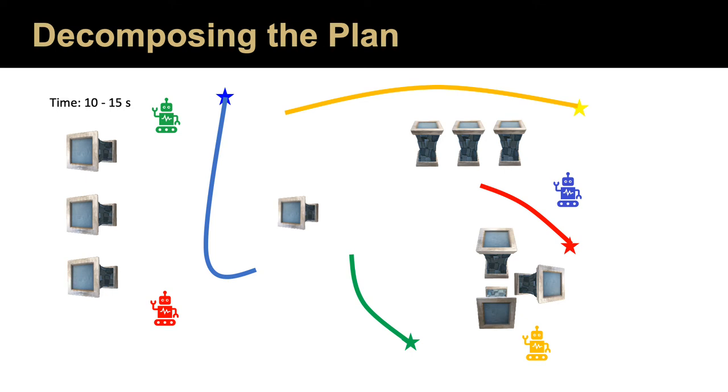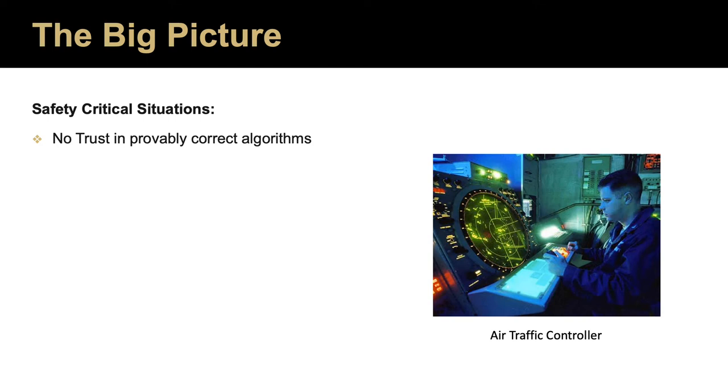A common question at this point is why we should even care about explaining a multi-agent path. The answer stems from the fact that there is little to no trust between provably correct algorithms and the daily users of such algorithms. This means that we end up using trained humans to perform tasks that we designed algorithms to do.